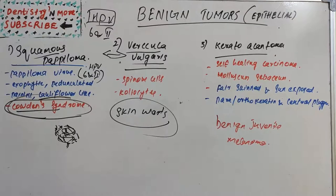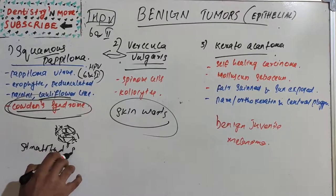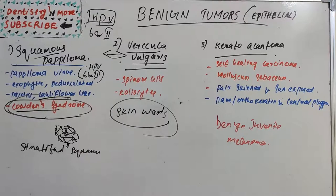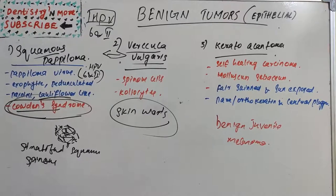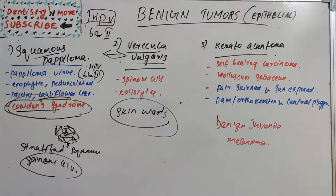Histologically, squamous papilloma has long thin finger-like projections extending above the mucosal surface, each made up of a continuous layer of stratified squamous epithelium containing a thin central connective tissue core that supports nutrient blood vessels. The essential feature is proliferation of the spinous cells in a papillary pattern. The connective tissue is supportive and not part of the neoplastic element.